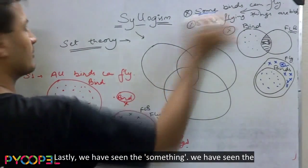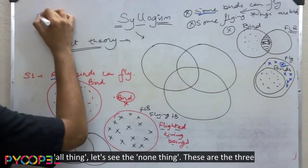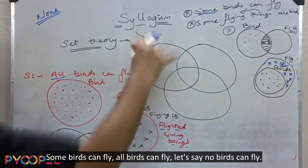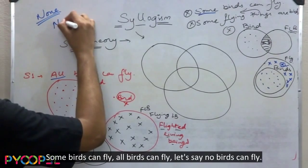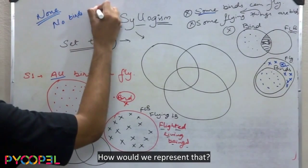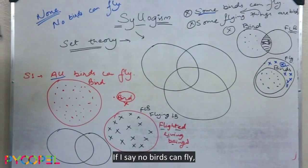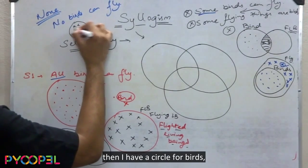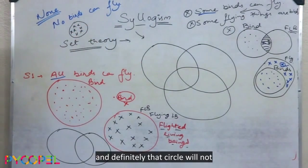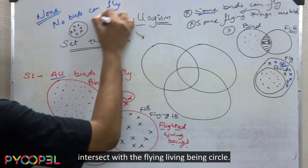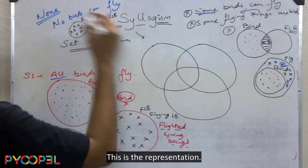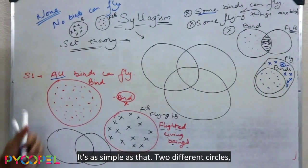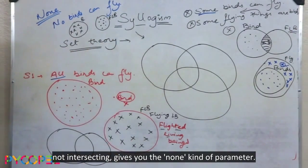We've seen 'some' and 'all.' Now let's see 'none.' These are the three most important parameters in syllogism questions: some birds can fly, all birds can fly, and no birds can fly. If no birds can fly, then the circle for birds and the circle for flying living beings do not intersect at all — two completely separate circles. That gives you the 'none' kind of parameter.